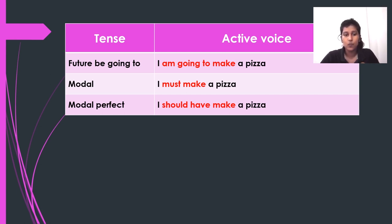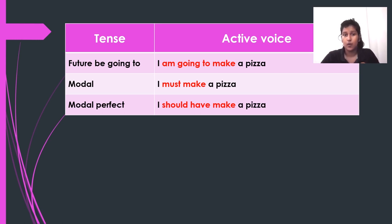When it comes to a modal verb, a modal verb is a type of verb used to indicate modality. Modal verbs are auxiliary or helping verbs such as will, could, would, must, might, and should. They help to express possibility, ability, permission, or obligation. So using the modal verb 'must': 'I must make a pizza.'